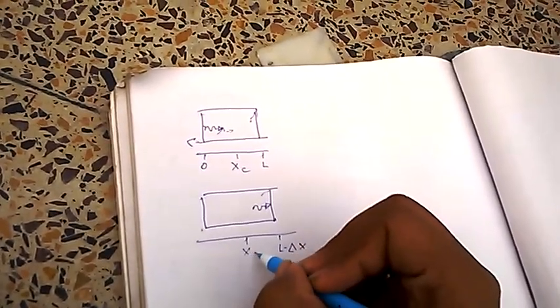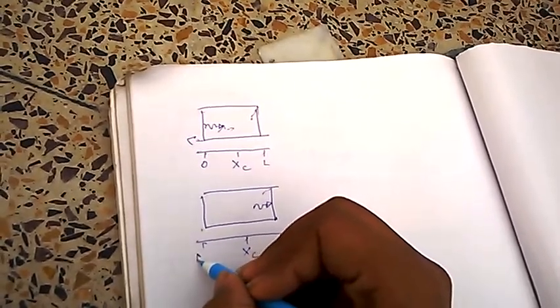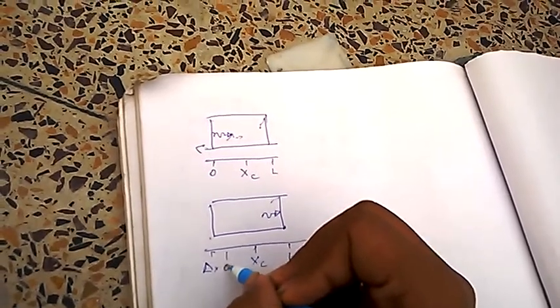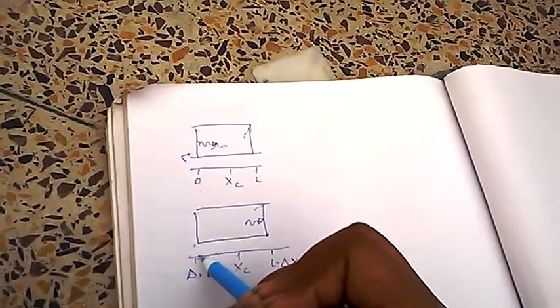Center of mass, and this is the change in distance, and this is the original origin position. So, it is moved from this position to this position.